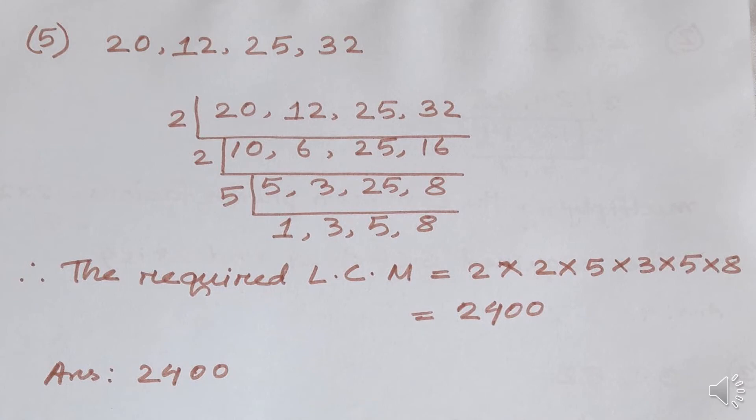For number 5, we have 20, 25, and 32. We use the prime factorization method. Dividing by 2: 20 ÷ 2 = 10, 12 ÷ 2 = 6, 25 stays (odd), 32 ÷ 2 = 16. Continue: 10 ÷ 2 = 5, 6 ÷ 2 = 3, 16 ÷ 2 = 8. Then 5 ÷ 5 = 1, 25 ÷ 5 = 5, 8 stays. The factors are 2, 2, 5, 3, 5, 8. Therefore, the required LCM = 2 × 2 × 5 × 3 × 5 × 8 = 2400.